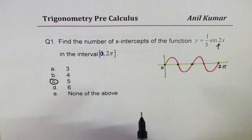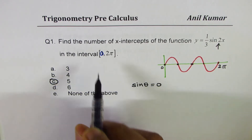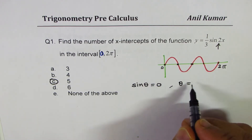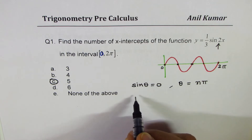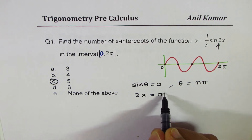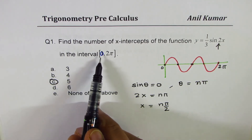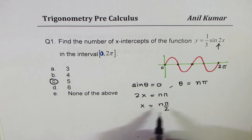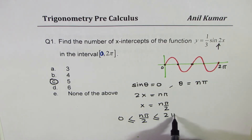Here is another way to find it. If sin θ = 0, those are the x-intercepts, and θ = nπ. Looking at the equation, 2x = nπ, so x = nπ/2. The interval is given as 0 to 2π, meaning x must satisfy 0 ≤ nπ/2 ≤ 2π.